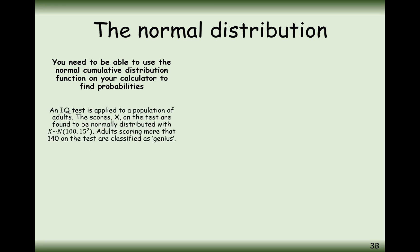Now for a question in context. An IQ test is applied to a population of adults. The scores x on the test are found to be normally distributed with mean of 100 and standard deviation of 15. This symbol means that x is distributed—that's what the squiggly line means—by the normal distribution. Inside the brackets you've got the mean first, then the variance written as standard deviation squared.